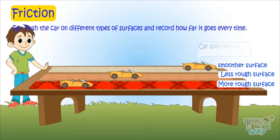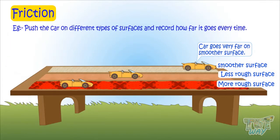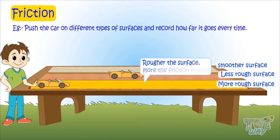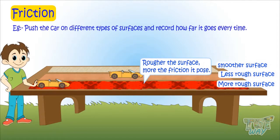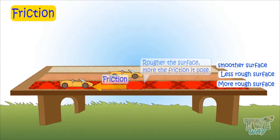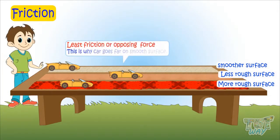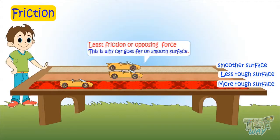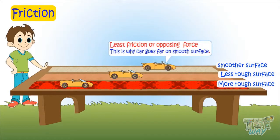The result is very clear. Smoother the surface, faster and farther the car goes. This is because the rougher the surface, the more friction it poses — the opposing force for any movement. The smoother the surface, the lesser the friction or the opposing force.